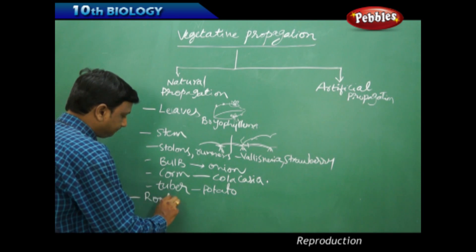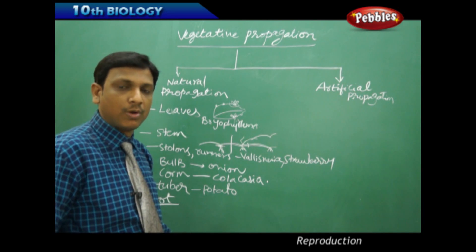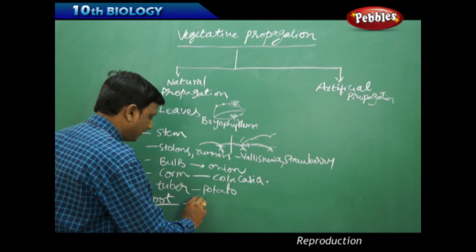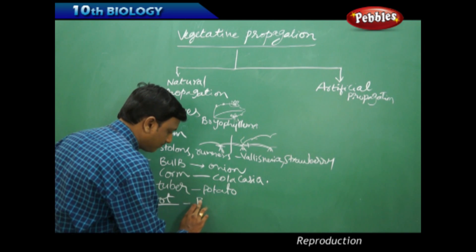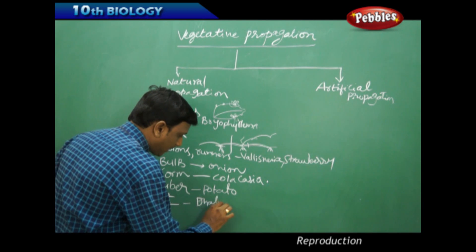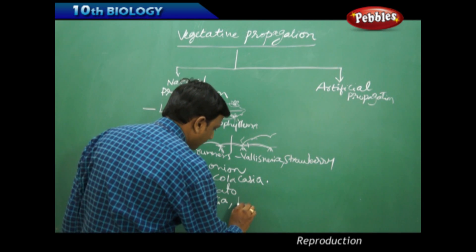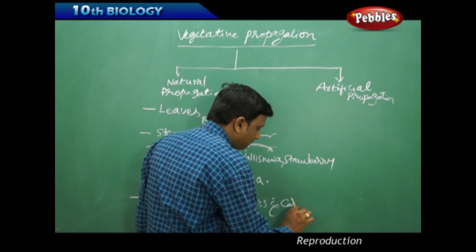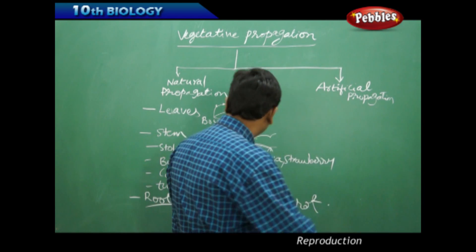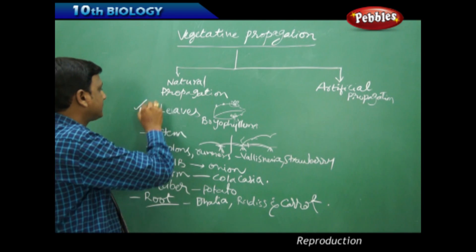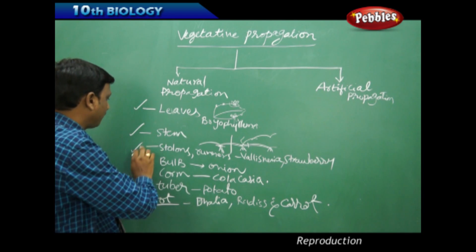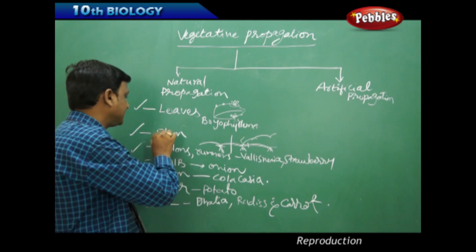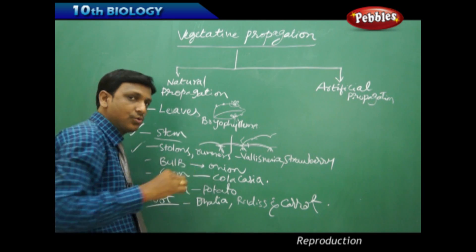The next one, root. Propagation by the root is observed in the roots of dahlia, radish, and carrot. These are the various methods of natural propagation in plants, by leaves, by stem, and by roots.